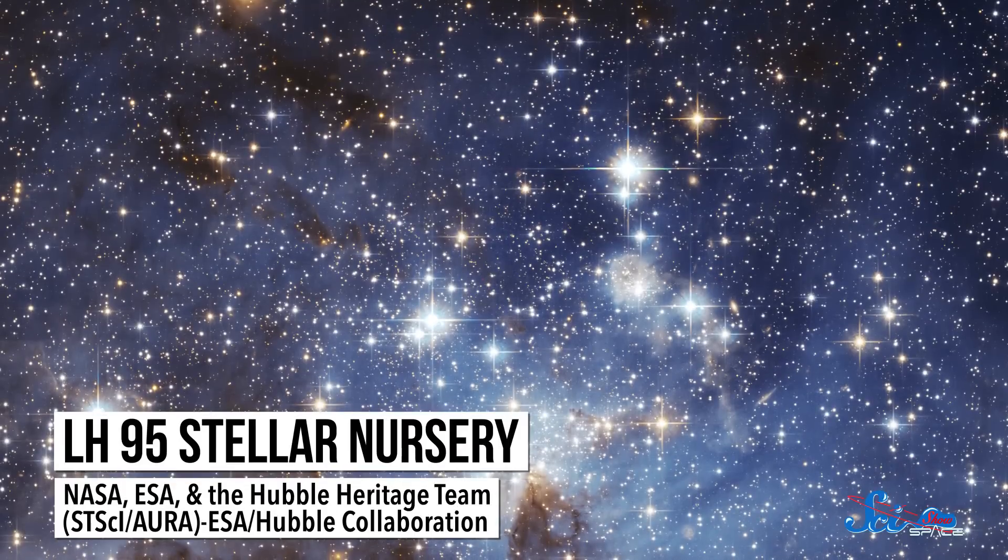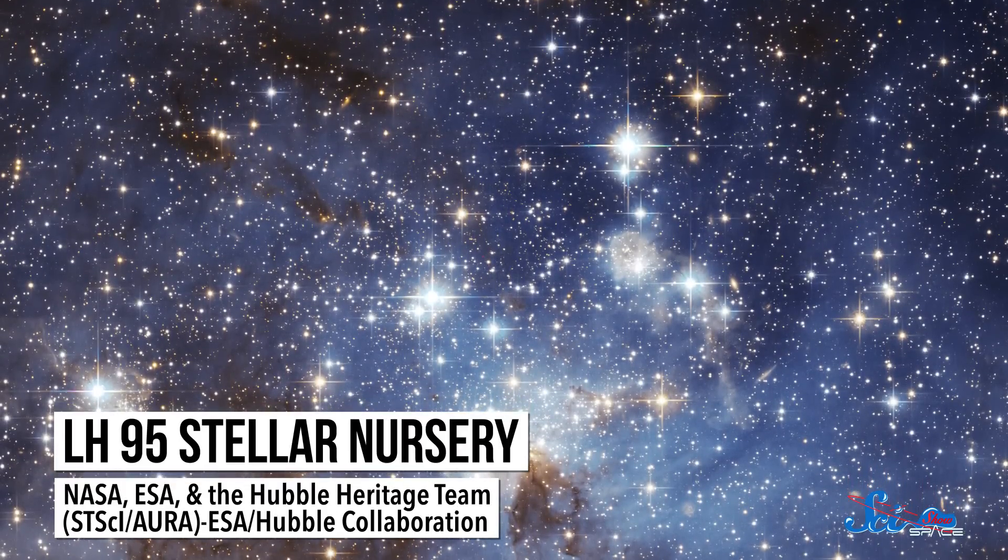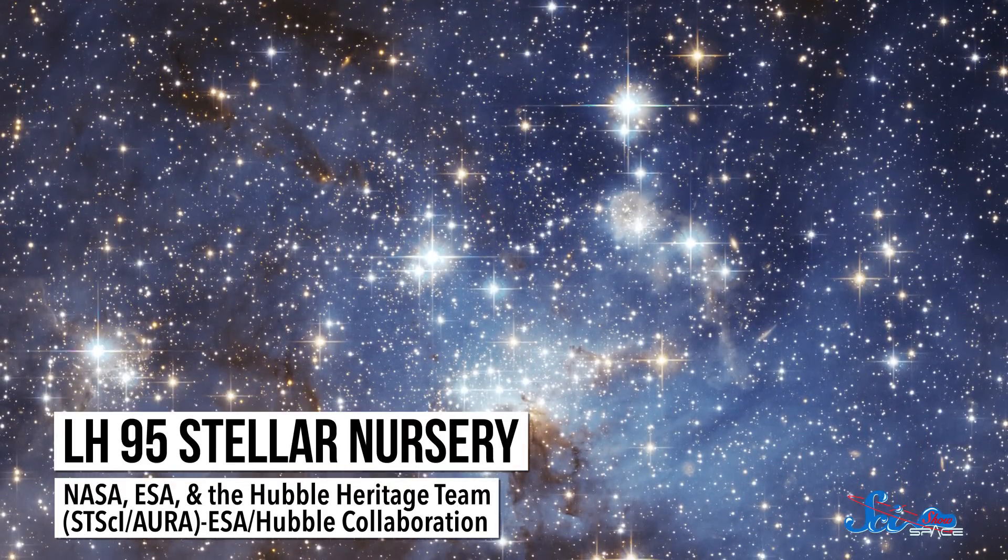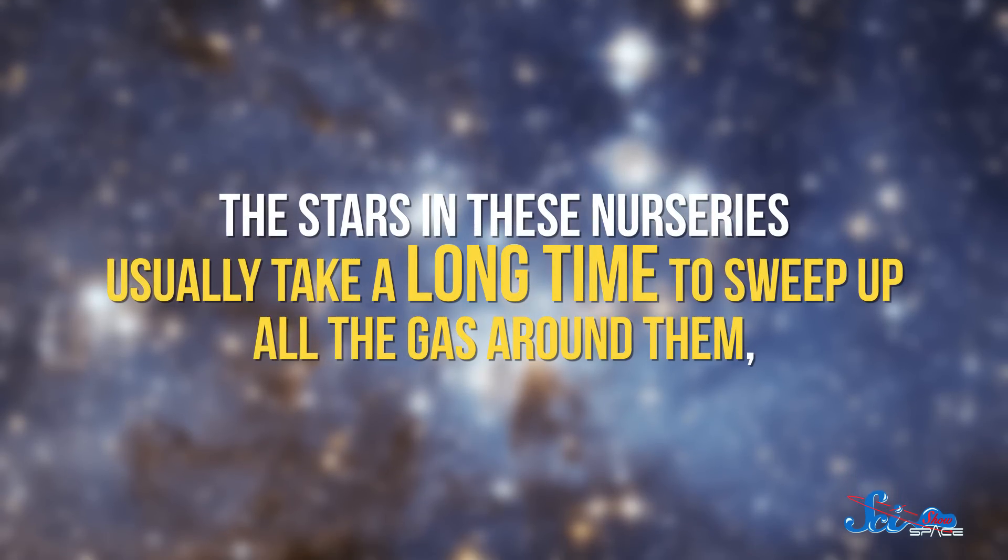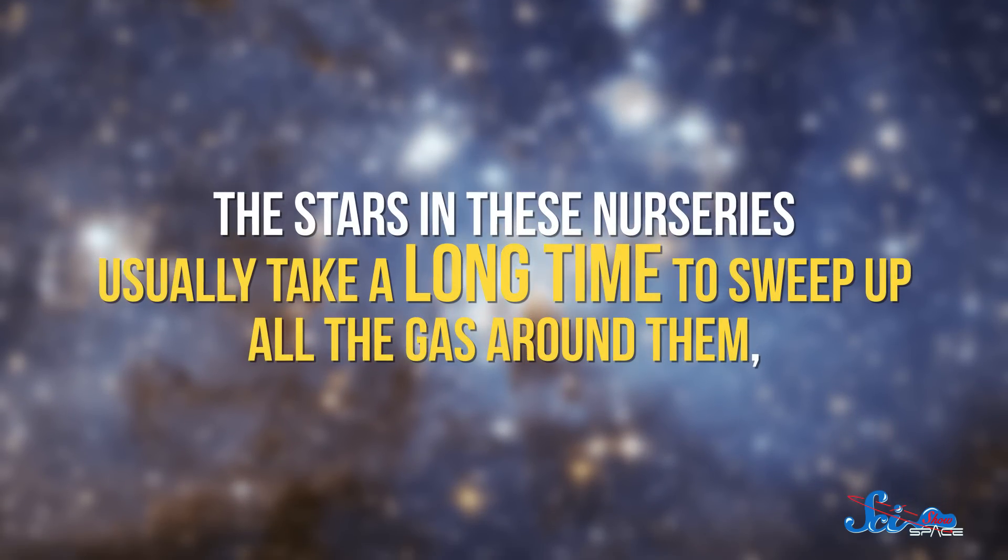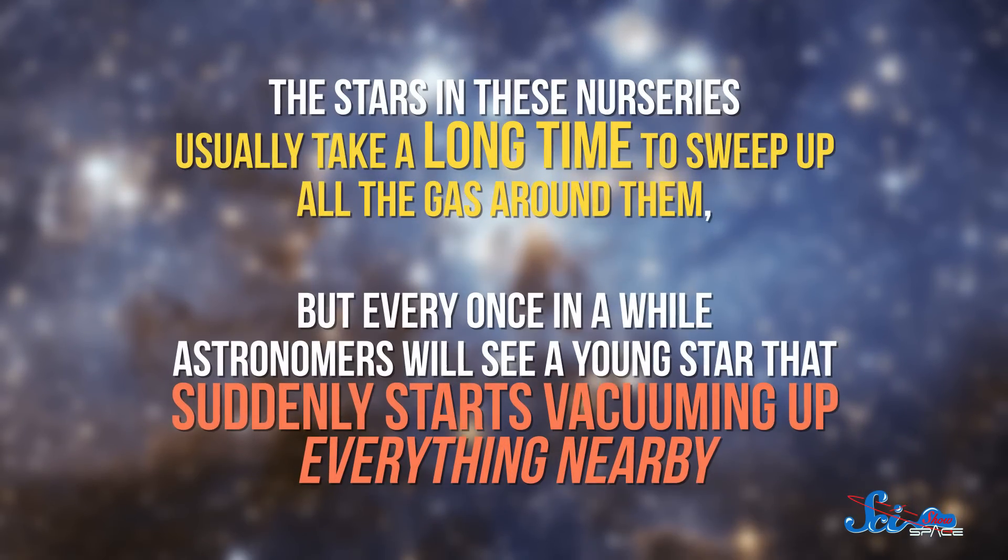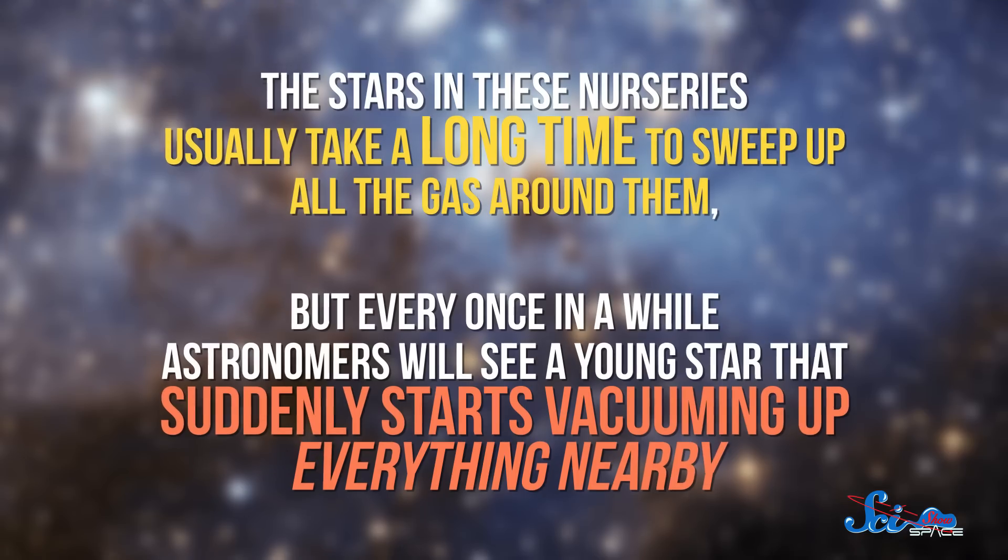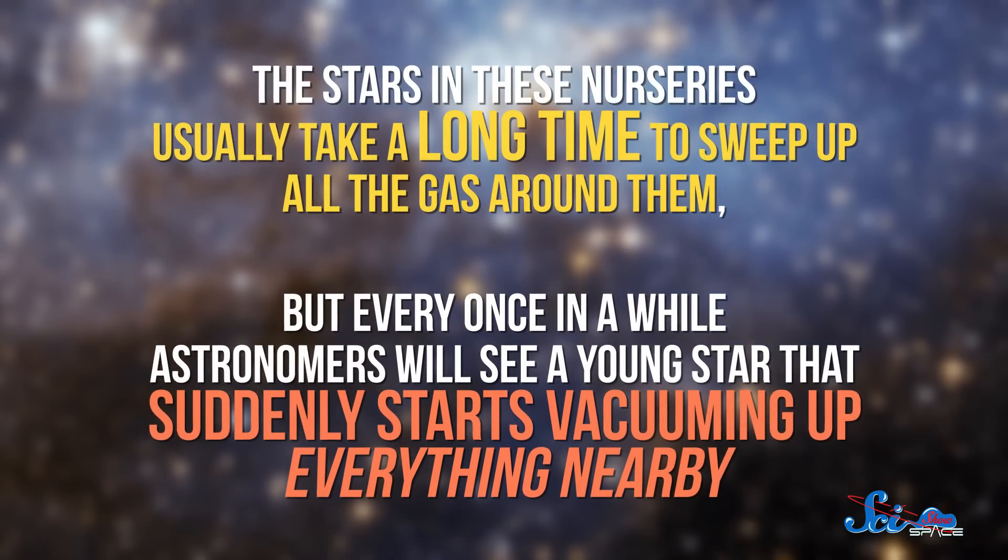Stars are generally born in stellar nurseries, which are huge clouds of gas and dust, where hundreds of stars can form at a time. The stars in these nurseries usually take a really long time to sweep up all of the gas around them. But every once in a while, astronomers will see a young star that suddenly starts vacuuming up everything nearby. All the gas that would have taken thousands of years to fall onto the star gets sucked up in just a few years.